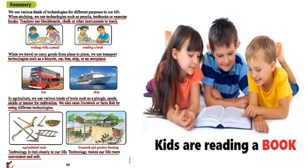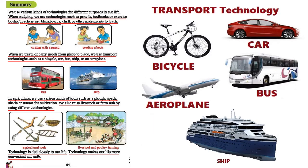When we travel or carry goods from place to place, we use transport technologies such as bicycle, car, bus, ship, or airplane. As seen earlier, the girl moves fast with a bicycle. If you want to go faster you can use a car. With a bus you can travel a long route. With a ship you can go from one place to another through waterways, and with an airplane you can go from one country to another within a very short time.